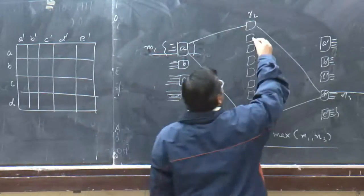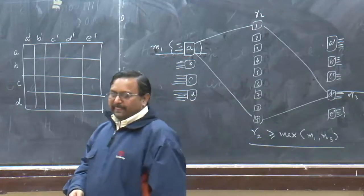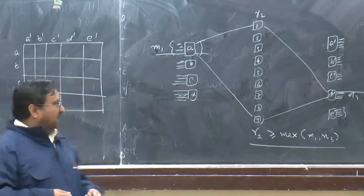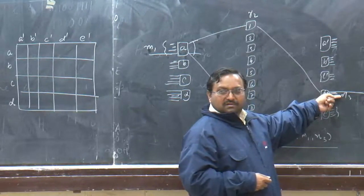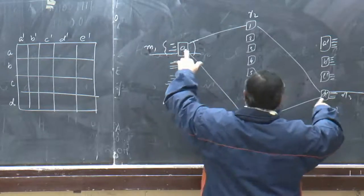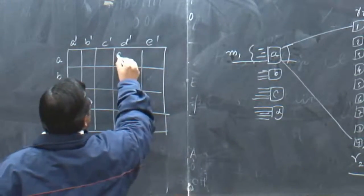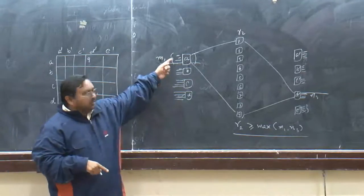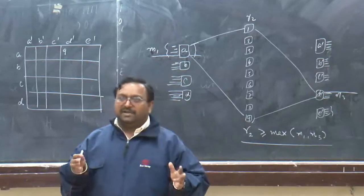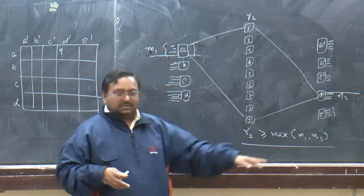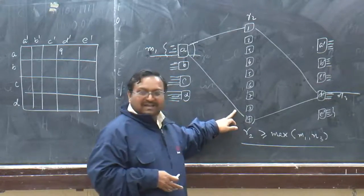Now let us look at how the Paull's matrix helps us. We put symbols on the middle-stage switches when a connection is set up. For example, if I take a particular port and set up a connection between ports A and D prime using middle-stage switch 9, I put the entry 9 in the corresponding cell. Through switch 9 only one connection can be set up — there is only one line on each side — so there cannot be another connection from a different port to D prime through switch 9.